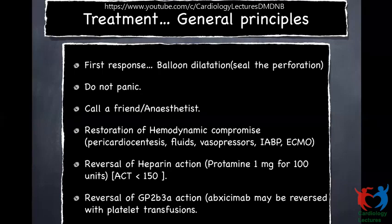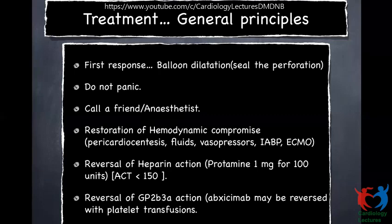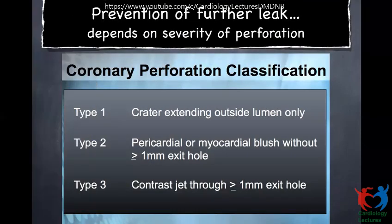If there is significant hypotension, start fluids, vasopressors, and the ultimate options would be IABP and ECMO. Reversal of heparin is always a controversial issue. We try to partially reverse the heparin action by giving around 7000 units of heparin, then partially reversing it with 25 to 35 mg of protamine so that at least 50% of heparin action could be reversed. Regarding glycoprotein 2B-3A receptor blockers, abciximab can be reversed by platelet transfusion.